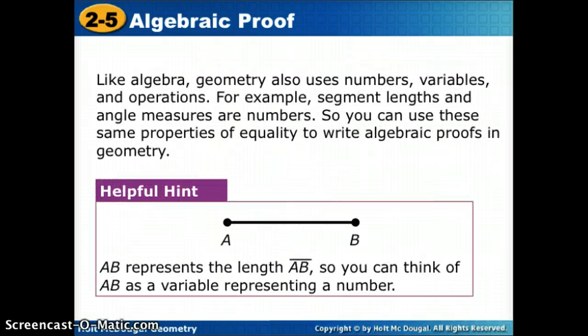Alrighty. Like in algebra, geometry also uses numbers, variables, and operations. For example, segment addition and angle measures are numbers, segment lengths and angle measures are numbers. So like a segment is 5 inches, that's a number, it's length. So you can use these same properties of equality to write algebraic proofs in geometry.